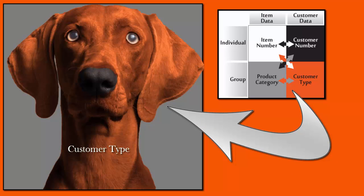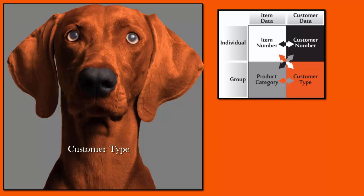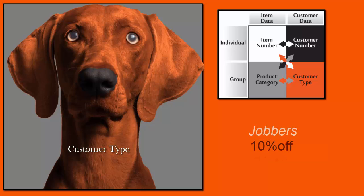The fourth way is to set your pricing according to customer type. For example, you may want all retail to get 5% off the list price, all jobbers to get 10% off the list price, and distributors to get 15% off the list price.